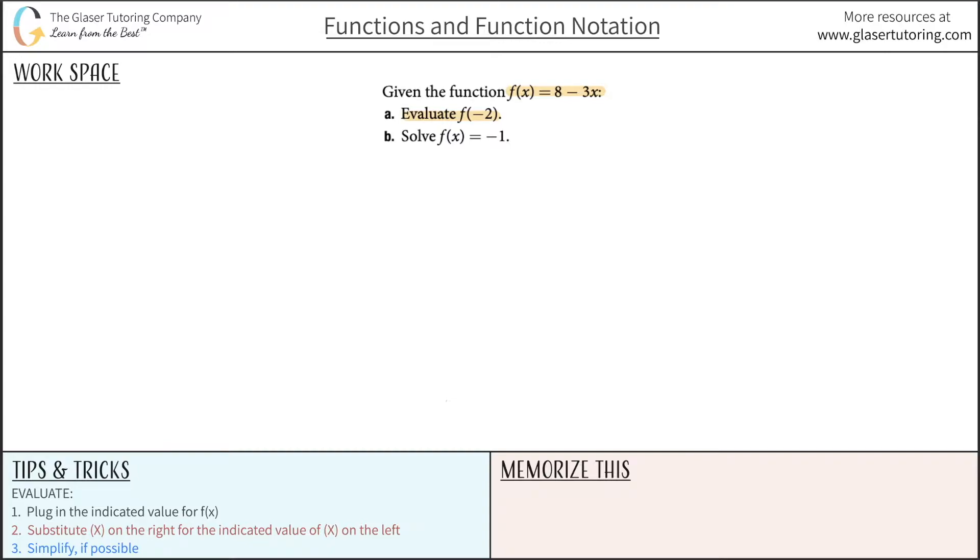All right, so anytime they're asking us to evaluate a function at a particular point, we can follow these steps at the bottom, the bottom left. So for letter A, let's just simply rewrite the equation first. So f of x is equal to 8 minus 3x.